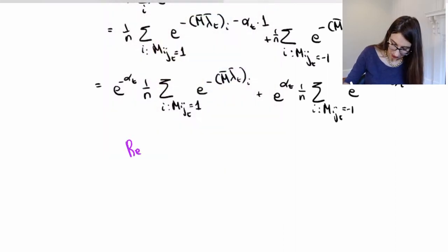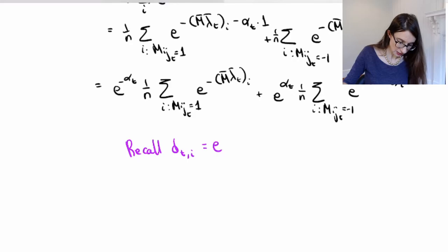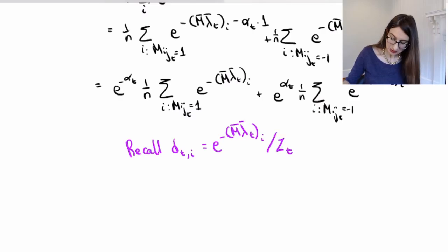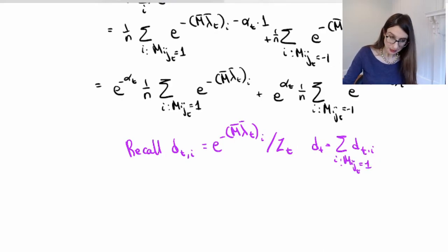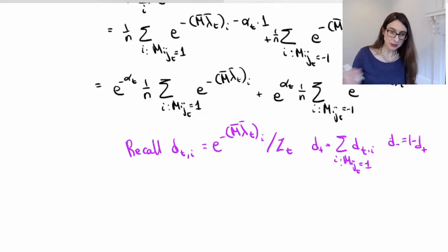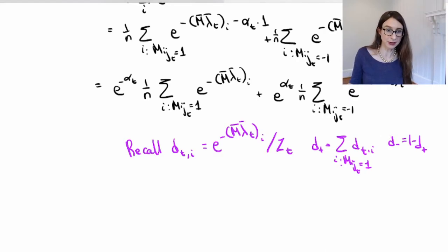Now I want to recall some notation. d_{t,i} by definition during the coordinate descent view is defined as the weights, where Z_t is that normalization factor. And then d_plus is just the d_{t,i}'s where m_{i,j_t} was 1. And d_minus is actually 1 minus d_plus. Now d_minus is the critical term here because d_minus is Adaboost's error rate — that's the sum of the weights of the points that were misclassified.